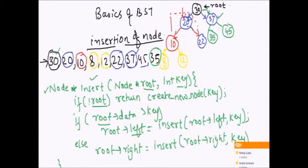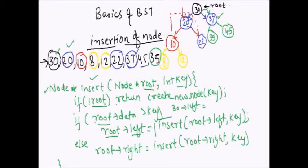Let's trace this code on our example. We start with 30 and root is null, so we create a node and return — that's fine. Now we go to 20: root is not null since 30 is already added, so the null check won't execute. Root's data (30) is greater than key (20), so root's left is set by calling insert with root's left (null) and key 20. That call finds root is null, creates a new node 20, returns it, and 20 is set as 30's left.